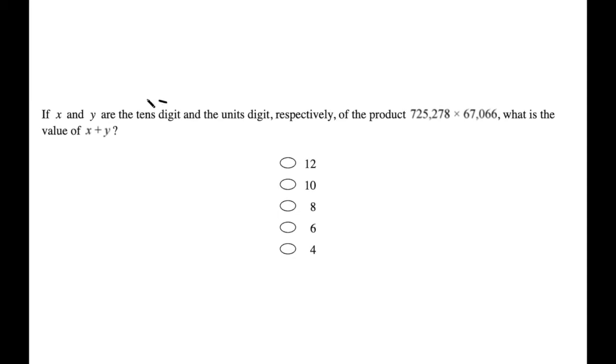First things first, let's define these terms. What are tens digit and units digit? Well, if I have a number like 523, then the units digit of this number is going to be 3. It's the last digit. And the tens digit is the second to last digit, so 2.